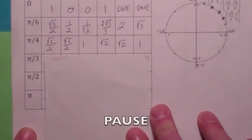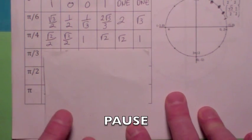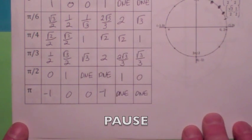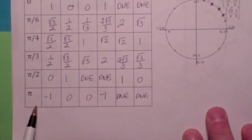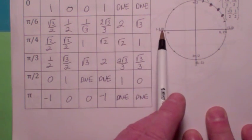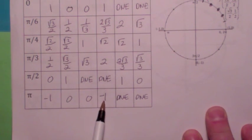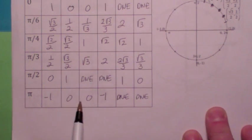Why don't you hit the pause button and see if you can fill out this table on your own. At t = π, you're at the point (-1, 0). So cosine(π) = -1, sine(π) = 0. Tangent would be 0 over -1, which is 0. The reciprocal of -1 is -1, so the secant is -1. And the cosecant and cotangent are undefined because they are reciprocals of zero.